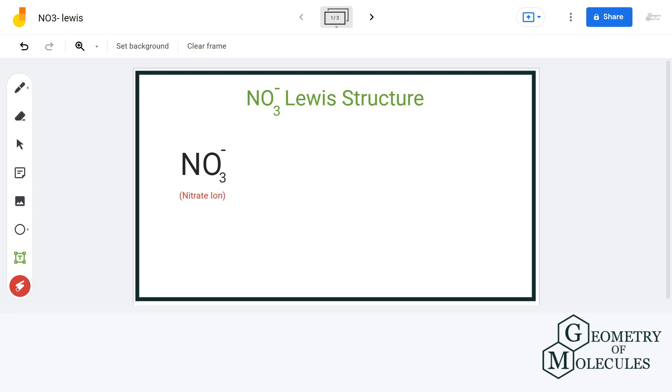Hello guys, welcome back to our channel. In this video we will discuss the Lewis structure of NO3 minus ion. It's a chemical formula of nitrate ion. For determining its Lewis structure, we will first count the total number of valence electrons.